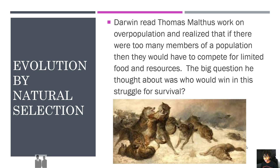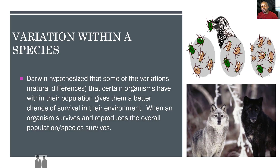The big question he thought about was who would win in the struggle for survival. Darwin hypothesized that some of the variations, or natural differences, that certain organisms have within their population gives them a better chance of survival in their environment. When the organism survives and reproduces, the overall population or species survives.